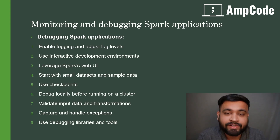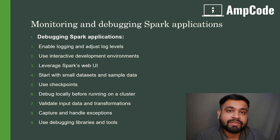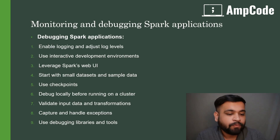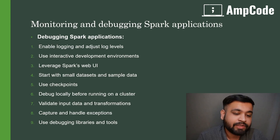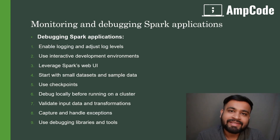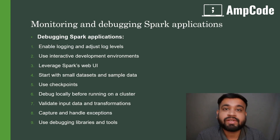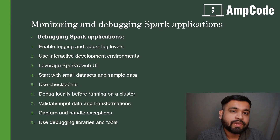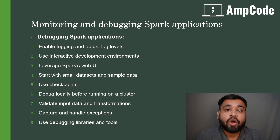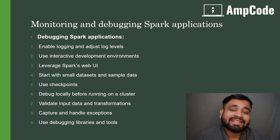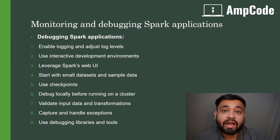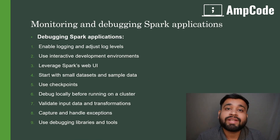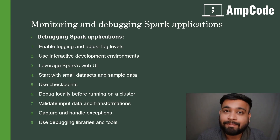There are several steps you can follow to debug your Spark applications quickly. The first one is to enable logging and adjust the log levels. There are many log levels you can configure using one configuration in Spark — specifically `spark.executor.logLevel` or `spark.driver.logLevel` — and you can set that log level to various stages according to the info you want in your console or application logs.